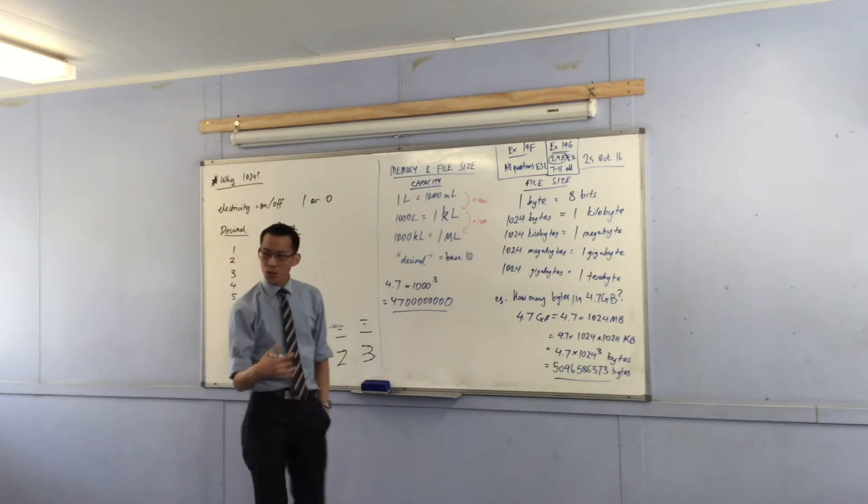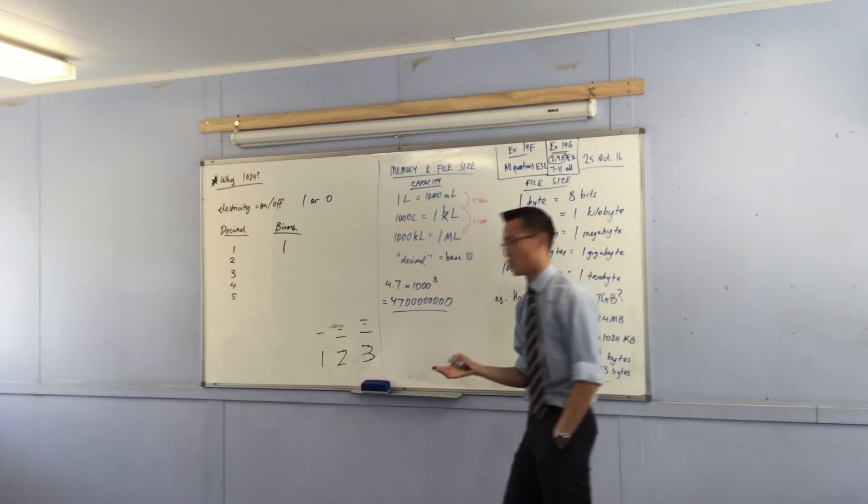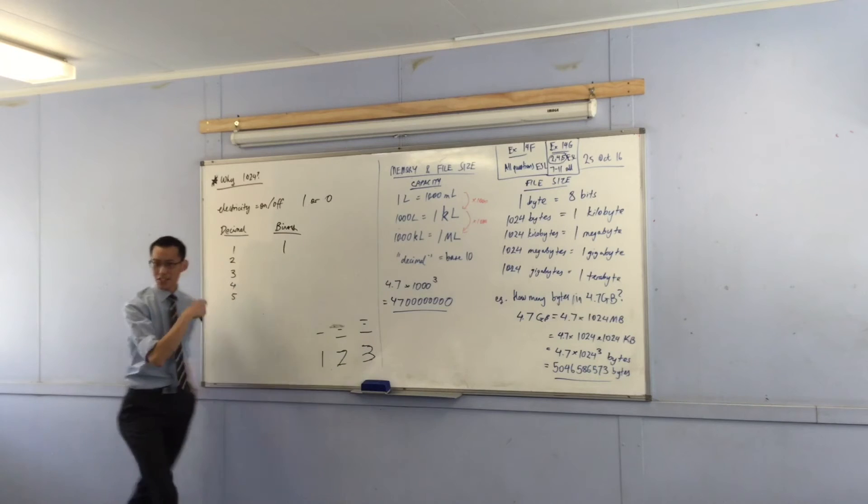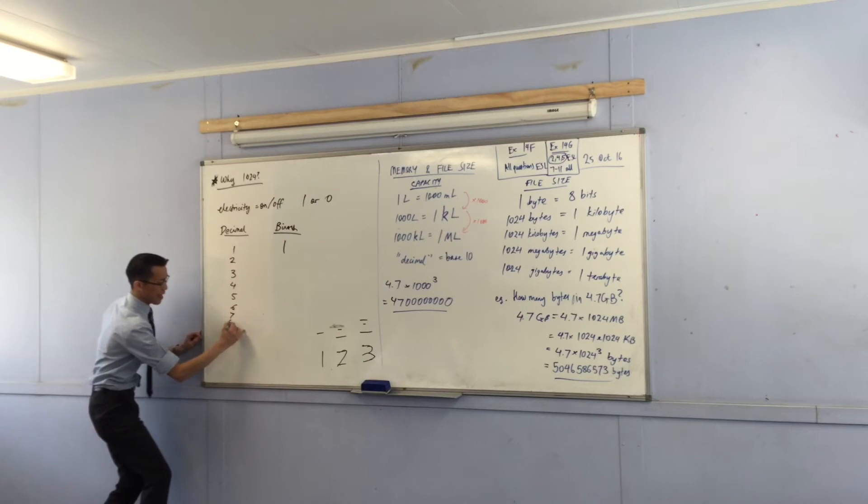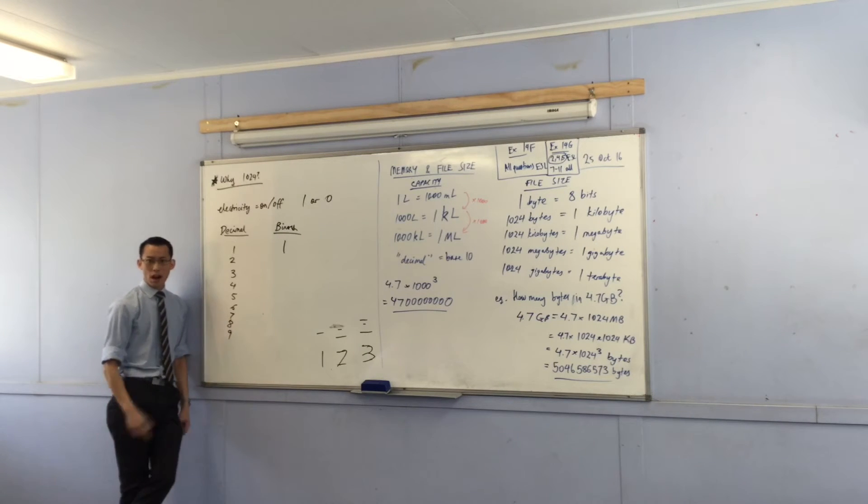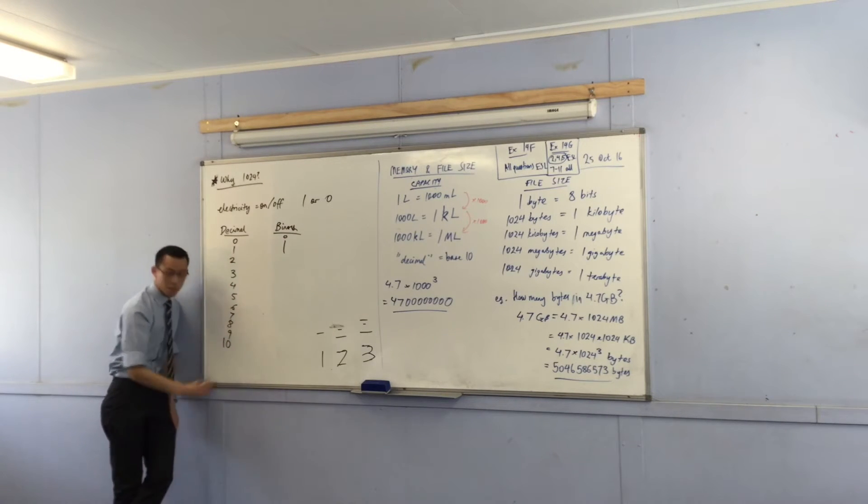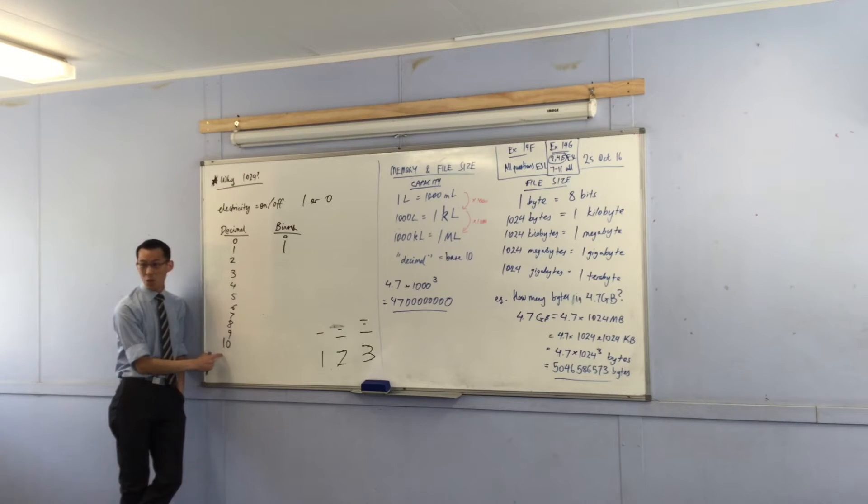But when you go to the next number, what happens in decimal? When you get to six, seven, eight, nine, you're like I've run out of shapes to use, so what do I do? I go back to the start. I have to start reusing symbols. So actually the first symbol is zero. So I reuse my first two symbols and I'm like, look, that's actually not a one, that counts as a 10. We use place value and you say okay, that's a new number.